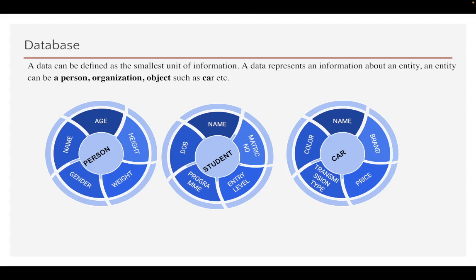You can think of a person as an entity, an organization, an object, a student, or an employee — even a car can be an entity. Each of these entities actually has some data attributed to them. For example, a person can have data like age, name, gender, weight, height, and so on.